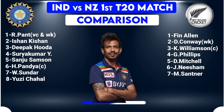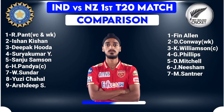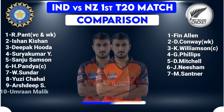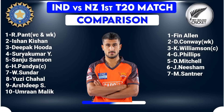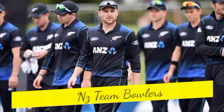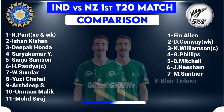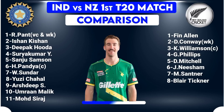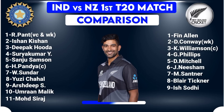Team India bowlers: Number 8 Yuzvendra Chahal, Right-arm Leg-spinner. Number 9 Arshdeep Singh, Left-arm Fast-bowler. Number 10 Umran Malik, Right-arm Fast-bowler. Number 11 Mohammed Siraj, Right-arm Fast-bowler. Team New Zealand bowlers: Number 8 Blair Tickner, Right-arm Fast-bowler. Number 9 Ish Sodhi, Right-arm Leg-spinner.